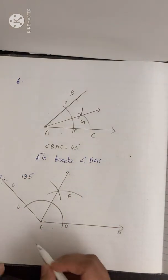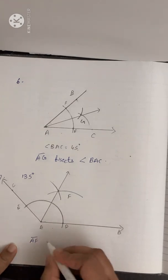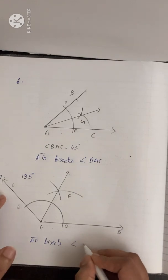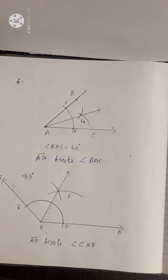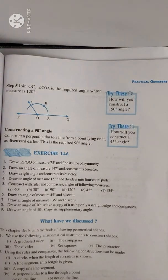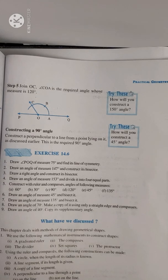Therefore AF bisects angle CAB. Now let's see how to do question number 8: draw an angle of 70 degrees and make a copy of it using only a straight edge and compasses.